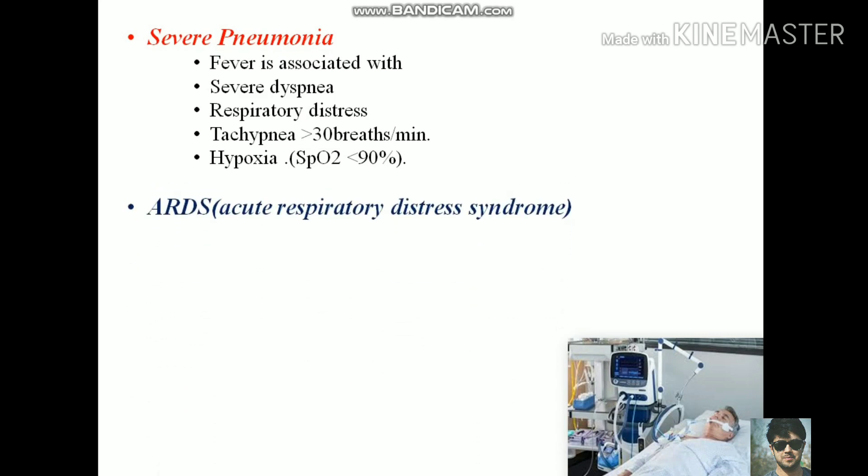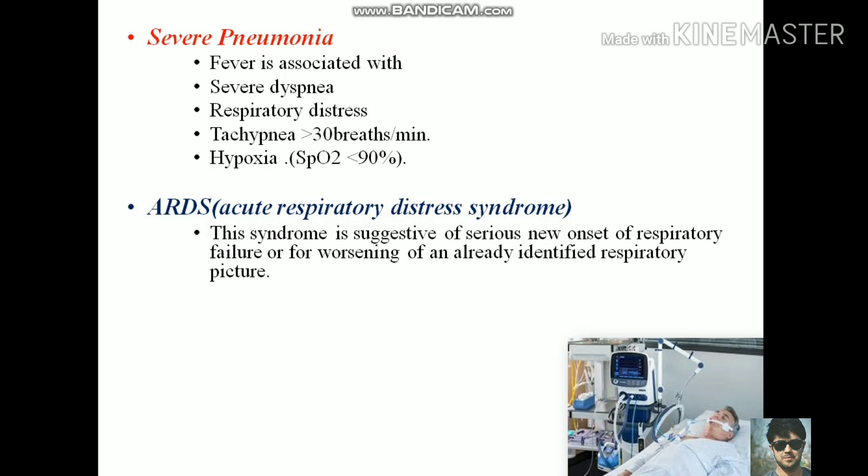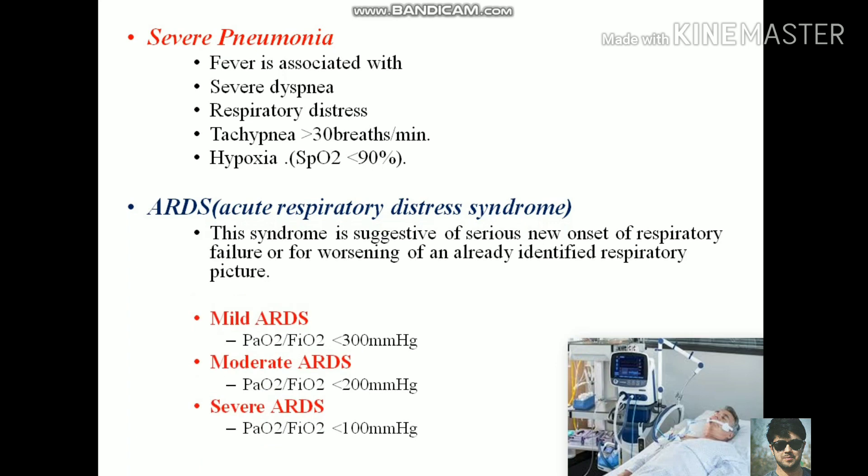In the severe form of COVID-19, acute respiratory distress syndrome (ARDS) is suggestive of serious new onset of respiratory failure or worsening of an already identified respiratory picture. Different forms of ARDS are distinguished based on the degree of hypoxia: mild ARDS has a PaO2/FiO2 ratio less than 300, moderate ARDS has a ratio less than 200, and severe ARDS has a PaO2/FiO2 ratio less than 100 mmHg.